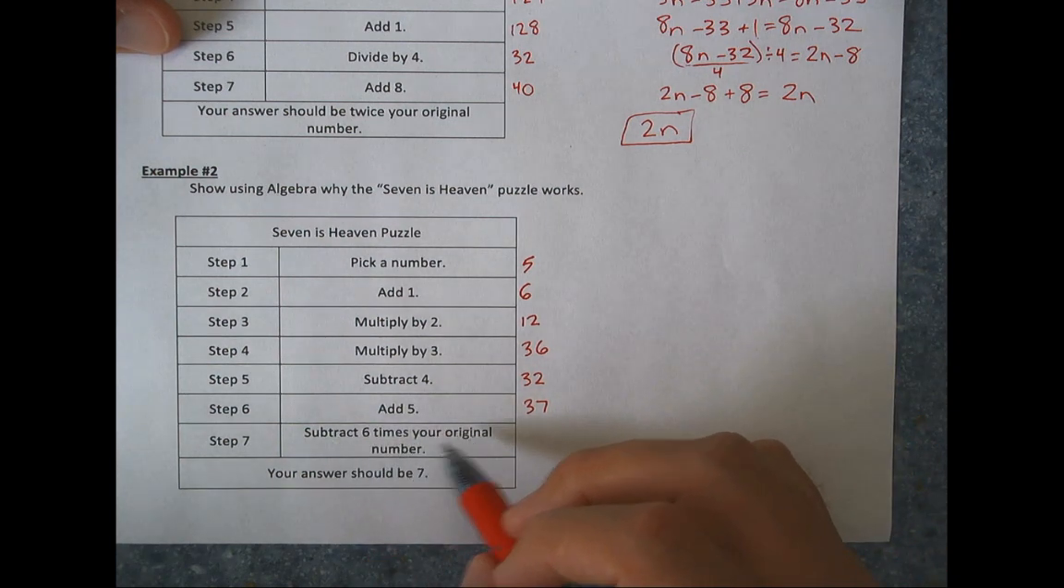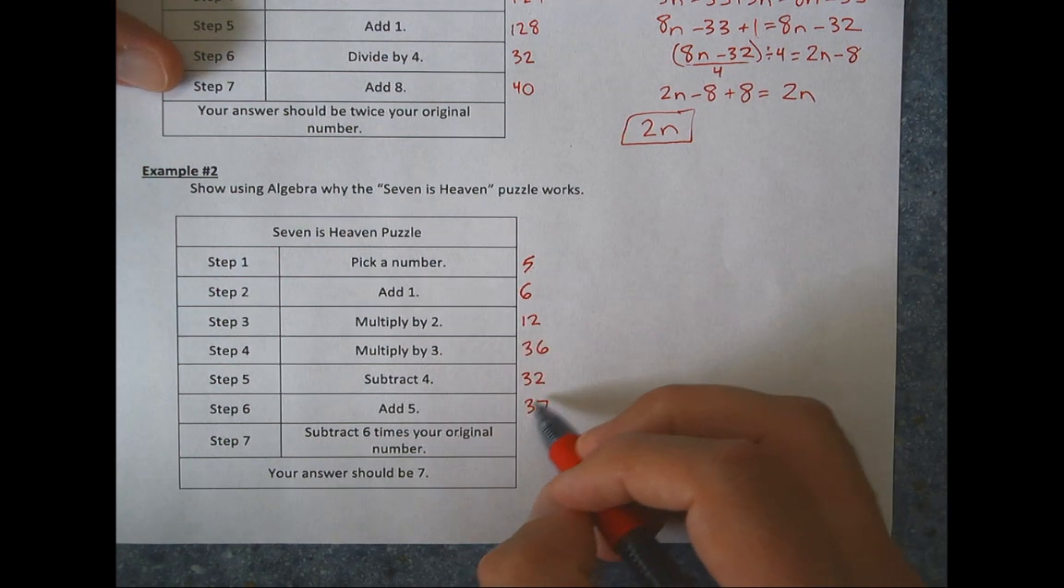Add 1, 6. Multiply by 2, 12. Multiply by 3, 36. Subtract 4. Add 5, 37. And now subtract 6 times your original number. My original number was 5. 6 times 5 is 30. So I'm going to subtract 30 off of this. And look at that. I'm at 7. Why does that work? Let's prove it.